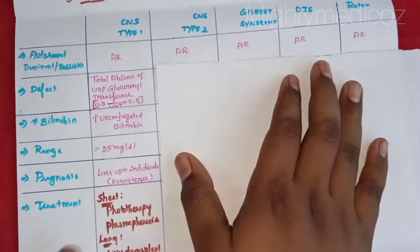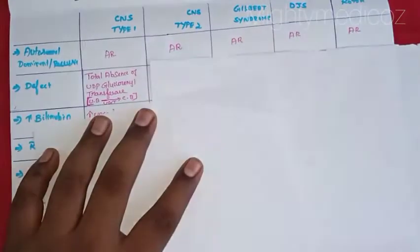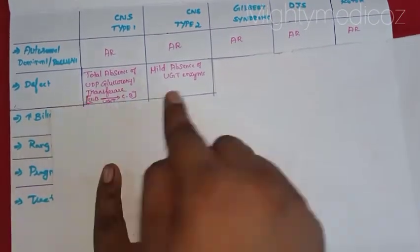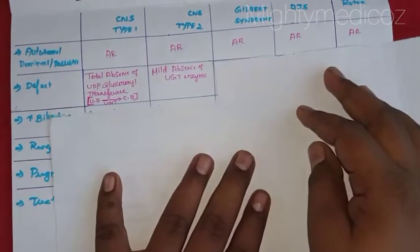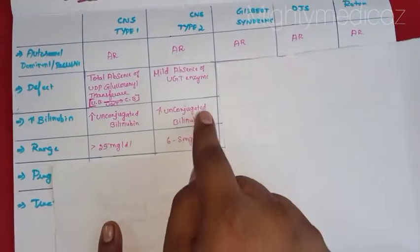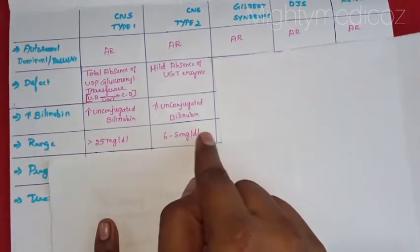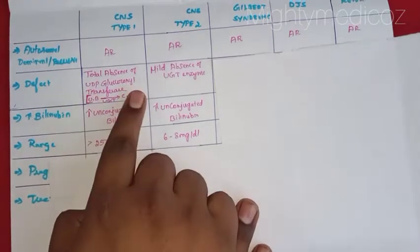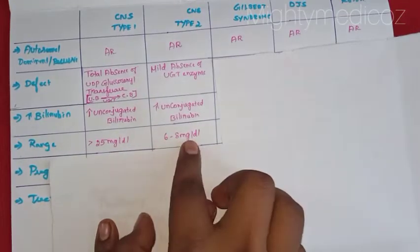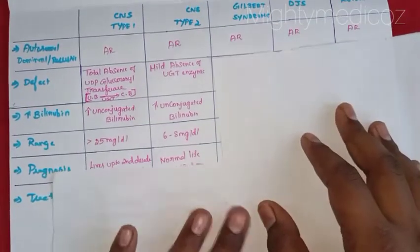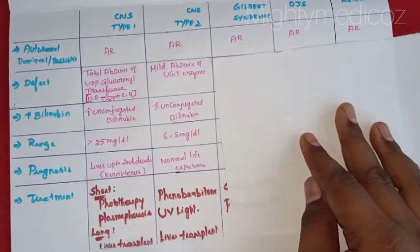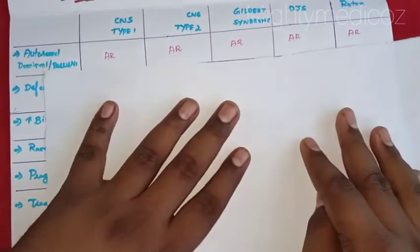Crigler-Najjar syndrome type 2: there is only a mild absence of the UGT enzyme — UDP Glucuronosyltransferase — meaning there is still a little bit of UGT enzyme present. Bilirubin levels are only 6 to 8 mg per deciliter. The prognosis is a normal life expectancy. Treatment is Phenobarbitone, which is the definitive treatment for this condition.